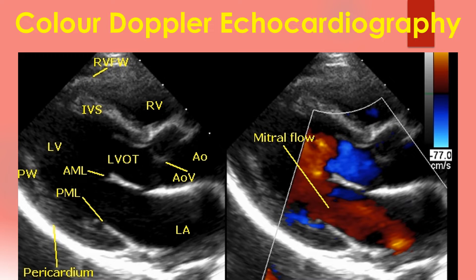Displaying Doppler flow information on a two-dimensional image is known as colour flow mapping or colour Doppler imaging. Here one image is two-dimensional and another has colour flow information in a sector. Blue colour represents flow away from the transducer and red represents flow towards the transducer. It has nothing to do with the colour of the blood, like oxygenated or deoxygenated.